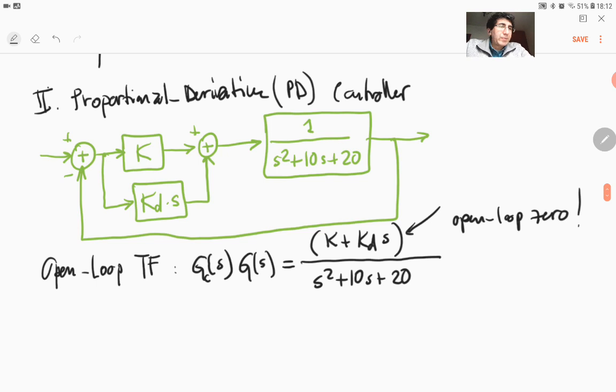So what about the type of the system? What happened with the type is that nothing changed with the type. This is still a type 0 system because nothing changed in the denominator. So that means ESS will be given by again the same term 1 over 1 plus Kp.